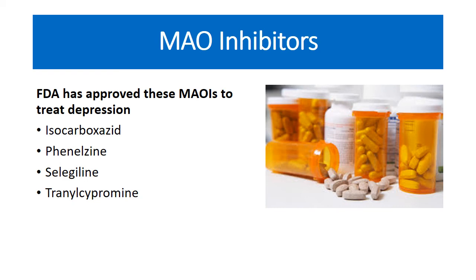Next, MAO inhibitors. The Food and Drug Administration has approved certain MAO inhibitors for the treatment of mental depression. They are isocarboxazid, phenelzine, selegiline, and tranylcypromine. These four MAO inhibitors block the MAO enzyme, thereby increasing the availability of monoamine neurotransmitters in the brain.